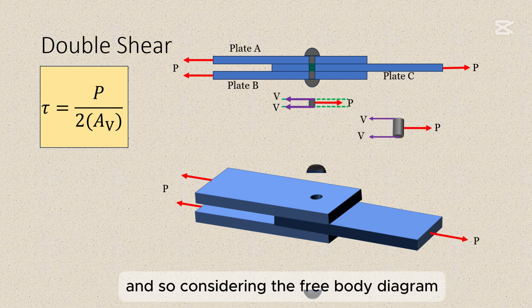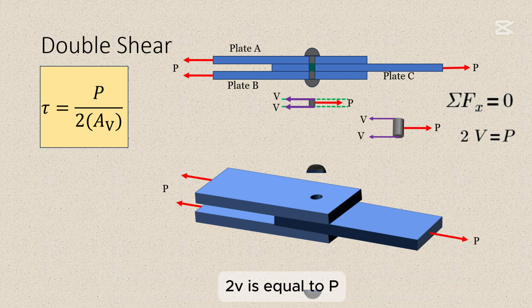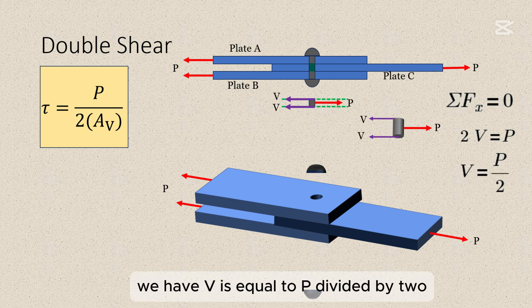Now we have force P from this loading, and then because we have two resisting areas, there will be two resisting forces. And so considering the free body diagram, we can sum up horizontal forces, and so we have summation of horizontal forces, 2V is equal to P. And so expressing V in terms of P, we have V is equal to P divided by 2.